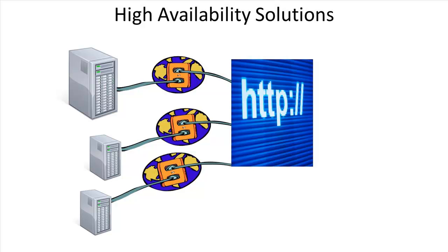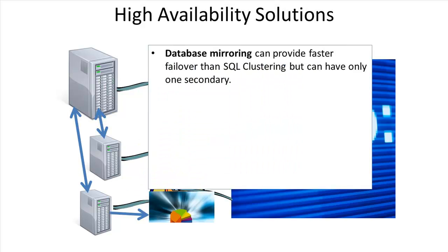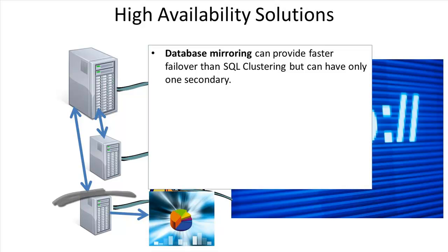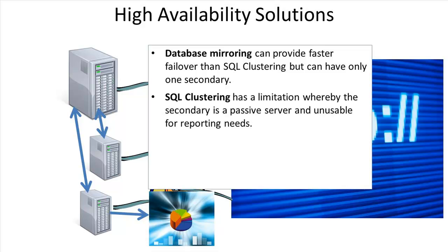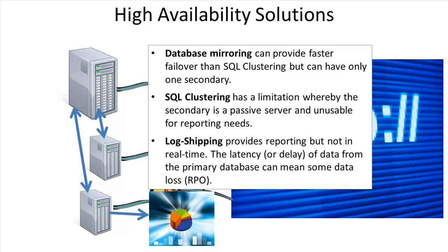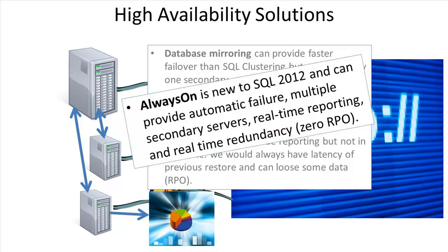In chapter two you'll hear terms like database mirroring, SQL clustering, log shipping, and replication. Database mirroring is a high availability feature that provides fast failover but only allows one secondary. SQL clustering allows many secondary servers but the secondary is passive and not usable for reporting. Log shipping provides reporting but not in real time, and the latency can mean data loss or an RPO. SQL Server 2012 introduces the Always On feature, which pulls from all the advantages of past HA solutions and has none of the limitations.